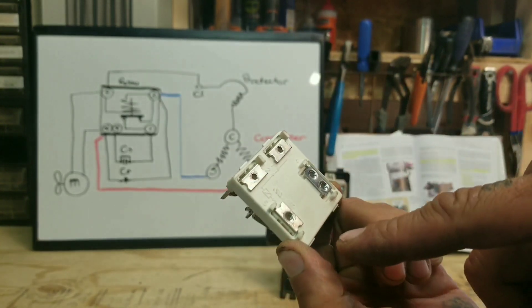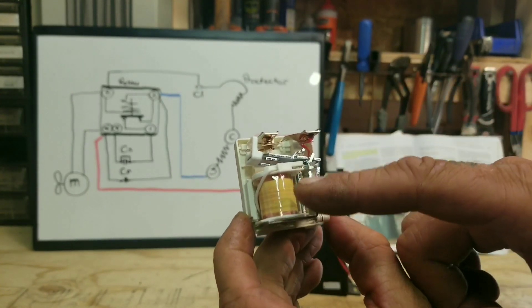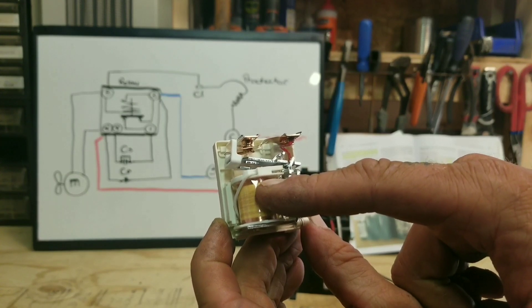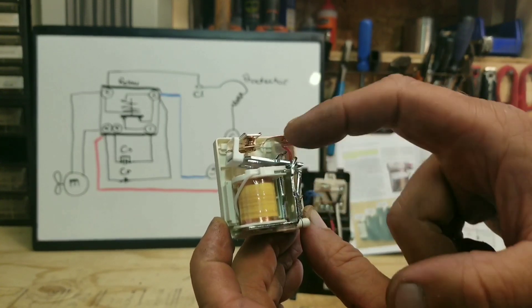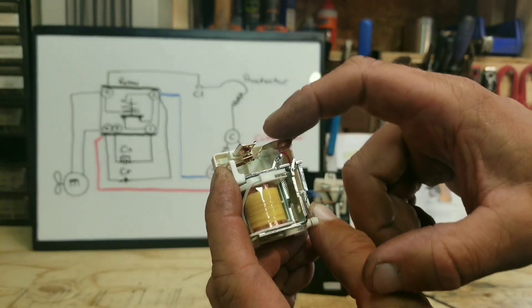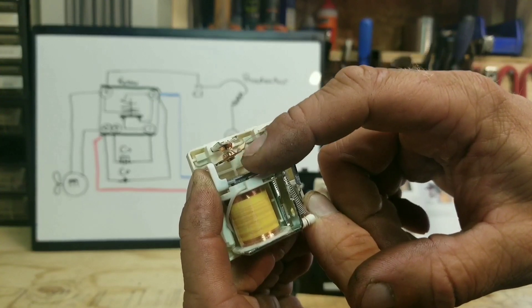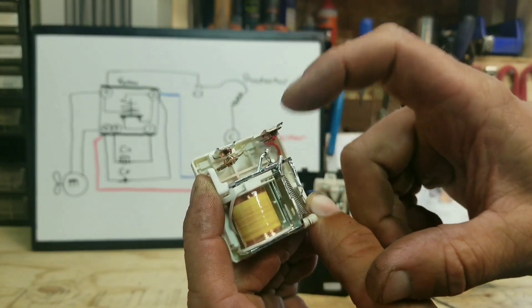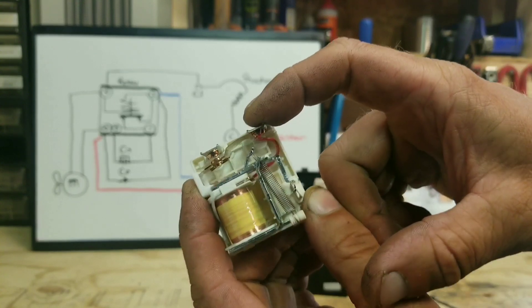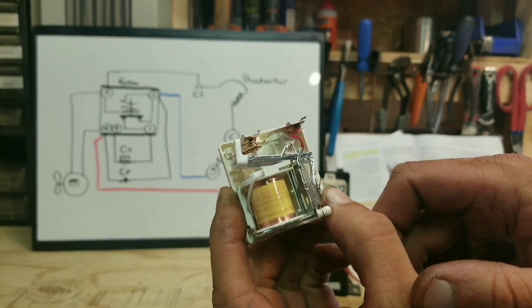And this solenoid is an electromagnetic solenoid. Once it's powered, it sucks this little armature down. Now if you can see right here, once that armature is pulled down, there is no longer connection from this wire to this wire, which is between our one and two—the one and two. Pretty simple.